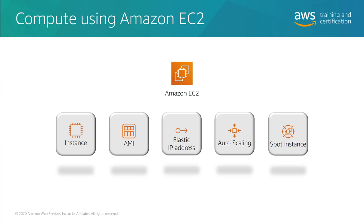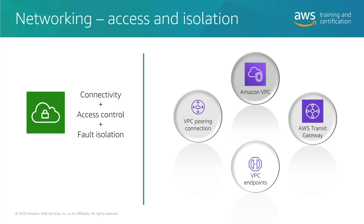EC2 spot instances are available at up to a 90% discount. You can use auto-scaling of on-demand instances in your design so that the EC2 group can meet player demand. Your Amazon EC2-based game server hosting solution can be designed for scalability, security, and resiliency. Usually this involves separating functions within the design for specialization and independent scaling, and these parts will need to connect, communicate, and collaborate.